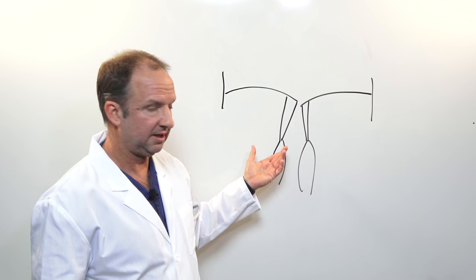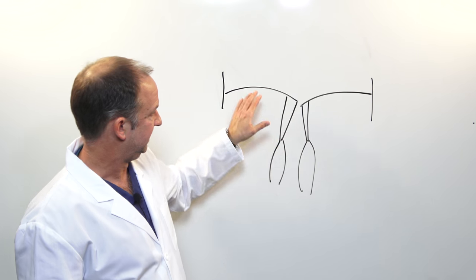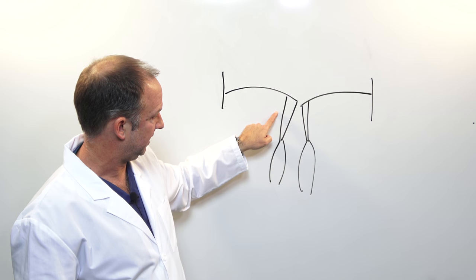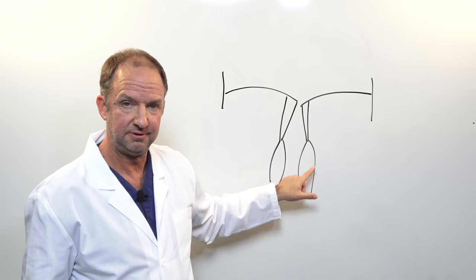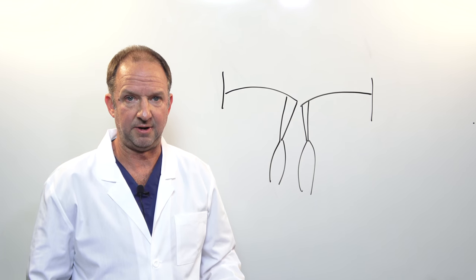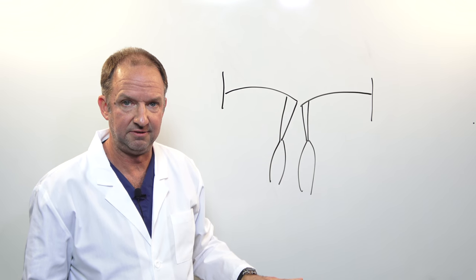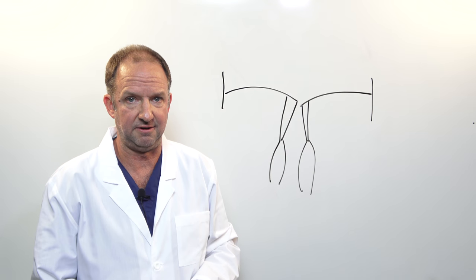So remember in the last episode I showed you what a normal mitral valve looks like. It's got two leaflets, chordae and papillary muscles. This is all a structure that we call the mitral valve apparatus. So anything that affects this part of the valve can result in a leaky mitral valve.